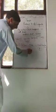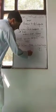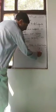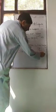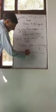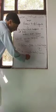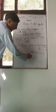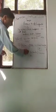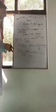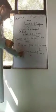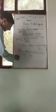Another example: 'He ___ to uncle's home daily.' The subject is 'he', which is third person singular, so we use 'goes'. The correct sentence is: 'He goes to uncle's home daily.'